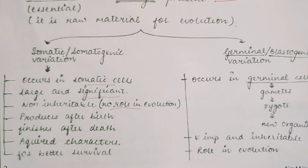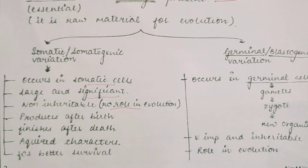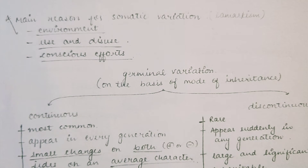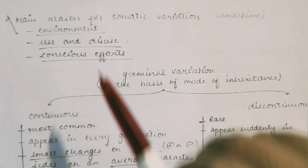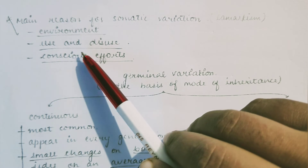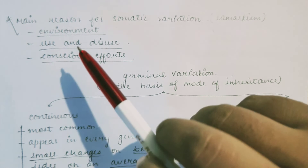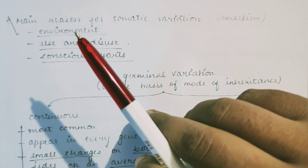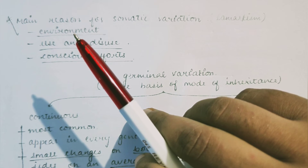Somatic variation occurs in somatic cells. These are large and significant changes but are non-inheritable — they have no role in evolution because somatic cells are not involved in sexual reproduction; they are only for support and nourishment. Germinal variation is more important because through it new species are generated and inheritance occurs. Germinal cells produce gametes, and fusion of gametes forms new organisms.